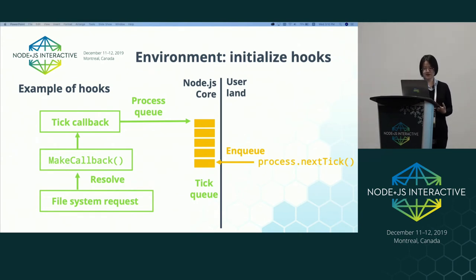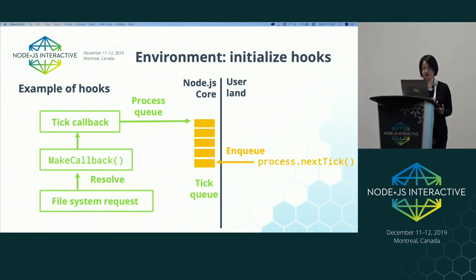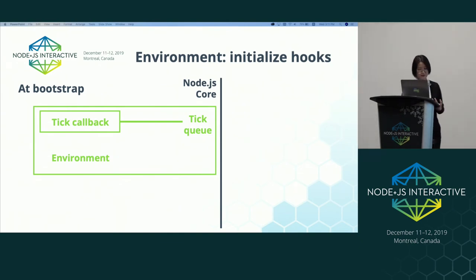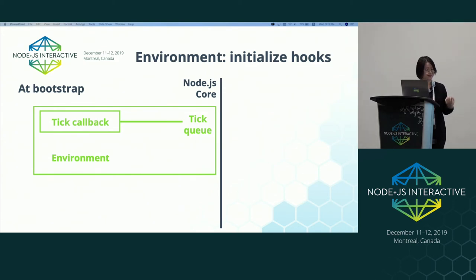Other than the globals, we also need to initialize several hooks when setting up the environment. This includes, for example, process.nextTick, which needs to invoke queued callbacks when async operations are done. During bootstrap, we need to create the tick queue and the tick callback and store the tick callback in the environment so that it can be called later. While initializing the runtime-independent states, no ticks should be added to the tick queue — we're just initializing the machinery to process it.